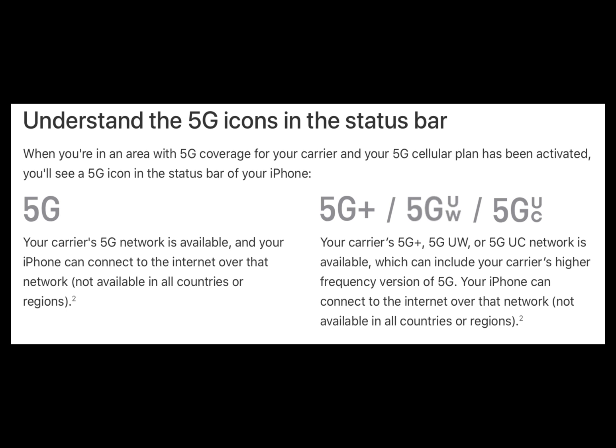What about the status bar icons? With the different types of 5G service — sub-6GHz, mm Wave, etc. — Apple has four different icons in the iPhone status bar to denote what you're using, whether you turn 5G on manually or use the 5G Auto smart data mode. Verizon uses 5G UW to denote mm Wave and other high-frequency 5G connections, AT&T uses 5G Plus.